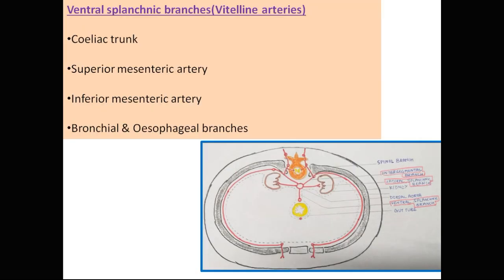The ventral splanchnic branches supply the derivatives of the gut tube and give rise to the celiac trunk, superior mesenteric artery, and inferior mesenteric artery. Above the diaphragm, they also give rise to the bronchial and esophageal branches.